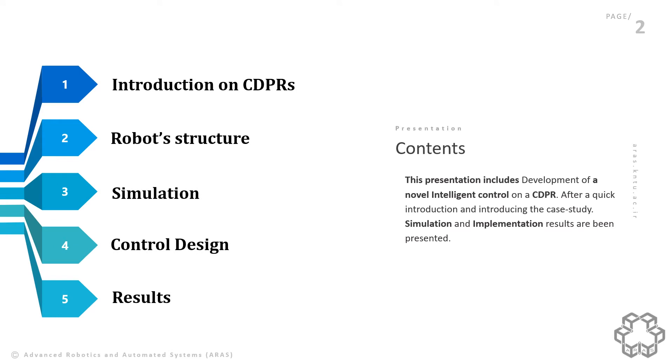First of all, let me have a quick review of serial and parallel manipulators. In this part, I want to talk about the positive features of cable-driven robots and why we use them from a practical point of view. Then, simulation and control design will be presented. The results will be shown in the next part and finally, the conclusion and future works will be discussed.